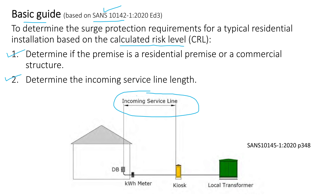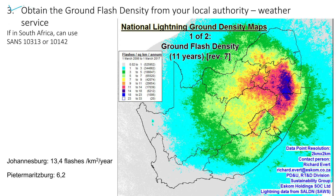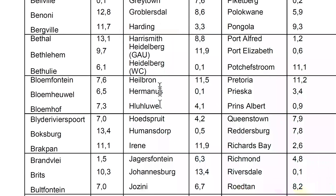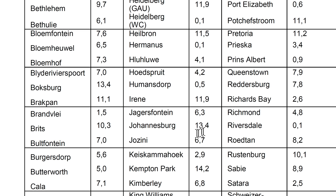The third step is to obtain the ground flash density from your local authority or weather service. For example, I have a map of South Africa showing ground flash density with color coding indicating flashes per square kilometer per year, measured over an 11-year span. Looking at the provinces, Mpumalanga has a significant ground flash density. For this example I'm looking at Gauteng — specifically Johannesburg. From SANS 10142 or SANS 10313, Johannesburg averages 13.4 flashes per kilometer per year.